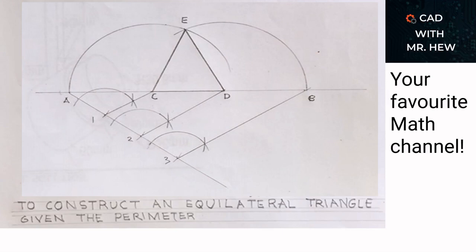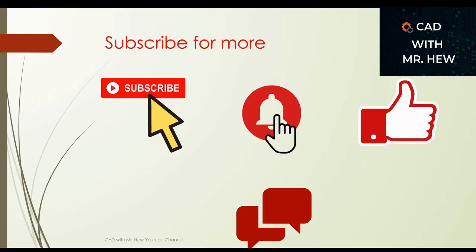We have come to the end of today's video. We looked at the construction of an equilateral triangle given the perimeter. In the next video we'll be looking at the construction of a triangle given the ratio of the sides. At Caddy Mr. Yu we aim to become your favorite math channel and we hope to see you in the next video. Please take care — thanks for watching, and don't forget to subscribe, hit the notification bell, like, comment and share.